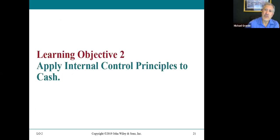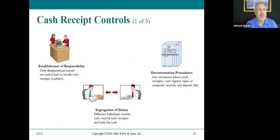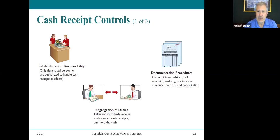Applying internal controls to cash: cash is the most liquid item and the most easily stolen. Cash receipt controls include establishment of responsibility — only designated personnel are authorized to handle cash. There is a physical control for cash. Documentation procedures use remittance advice, mail receipts, cash register tapes, computer records, and deposit slips. One person handles the cash; another person records the transaction — that's segregation of duties.